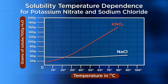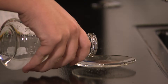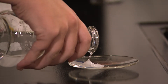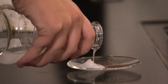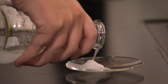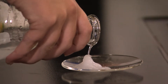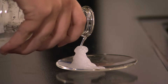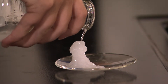Our laboratory work showed that we can graph the solubility of solutes to create solubility curves for all chemicals. We even found that it's possible to supersaturate a solution with solute so that the solute comes out of solution very readily.